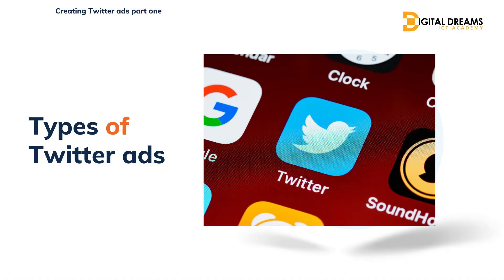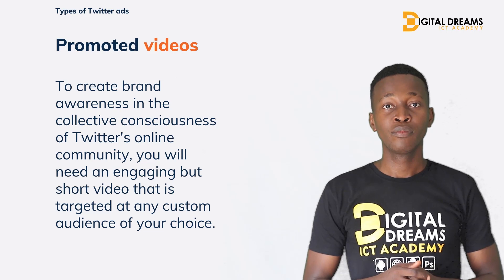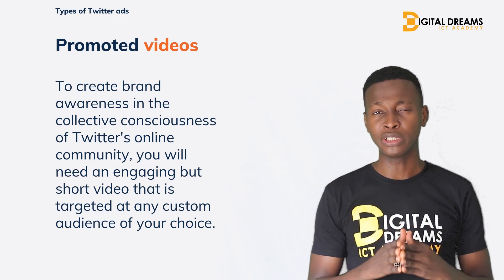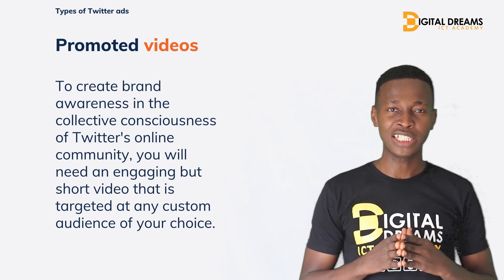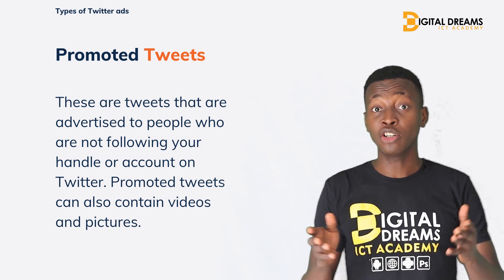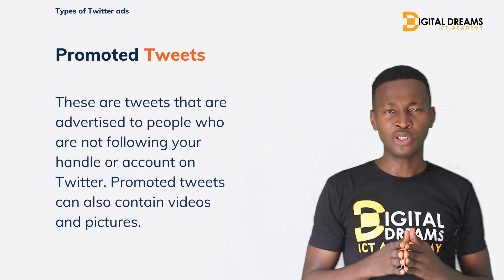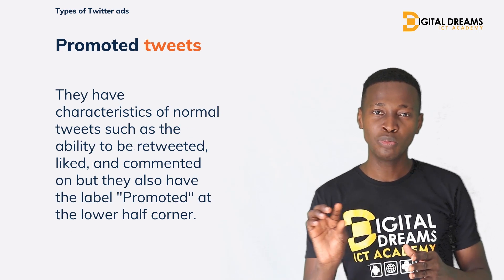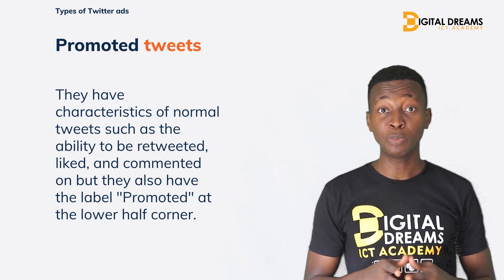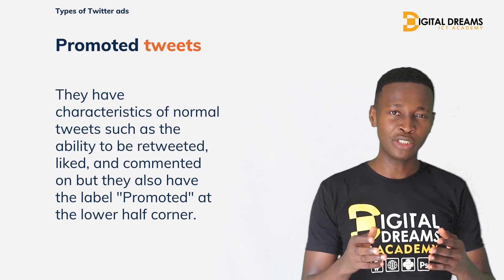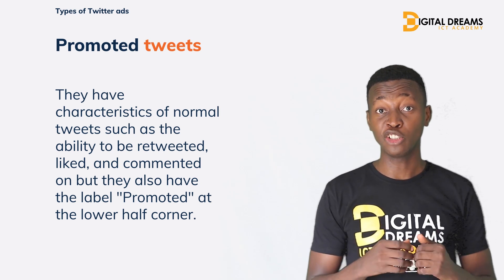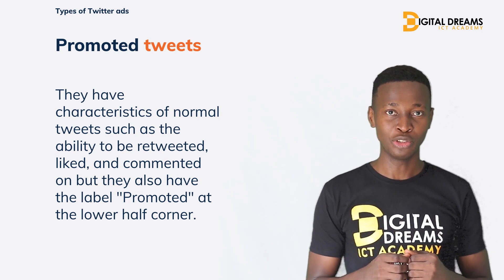Now let us look at the common types of Twitter ads available for users. Promoted videos: these are short videos used to communicate to the public what your product and brand stand for. Next up is promoted tweets: promoted tweets are just like any ordinary tweets on Twitter, but the only difference is that they contain a small promoted logo underneath at the lower right area. Promoted tweets can also be retweeted, liked, and commented on, and they are used to advertise your products and services to people who are not following you on Twitter.